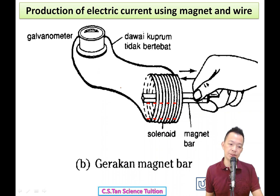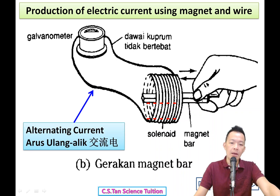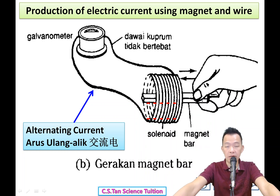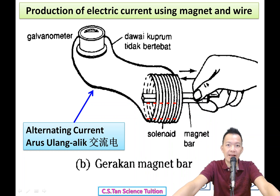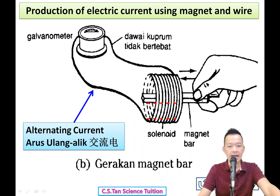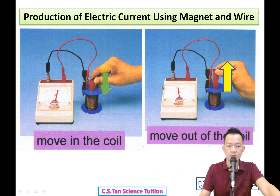This type of electric current is called alternating current 交流电 - they go and back, go and back. It is different from the electric current from a dry cell 干电池里面的电. That is called direct current 直流电 - totally different. AC goes positive-negative-positive-negative 加减加减, that is alternating current.